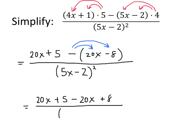On the bottom, we still have 5x minus 2 quantity squared. This 20x and the minus 20x cancel, and we get 5 plus 8, which is 13, all divided by 5x minus 2 squared. And we're done.